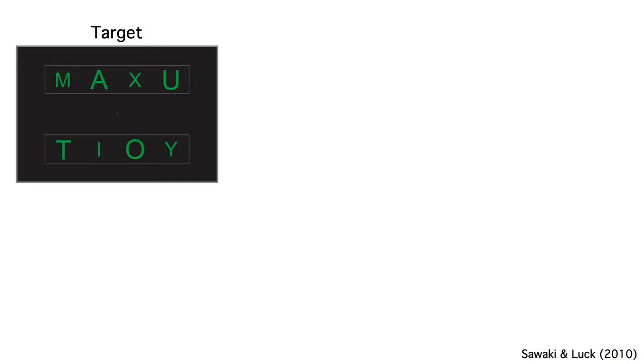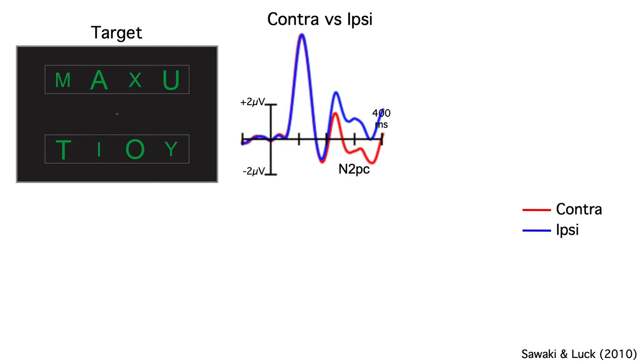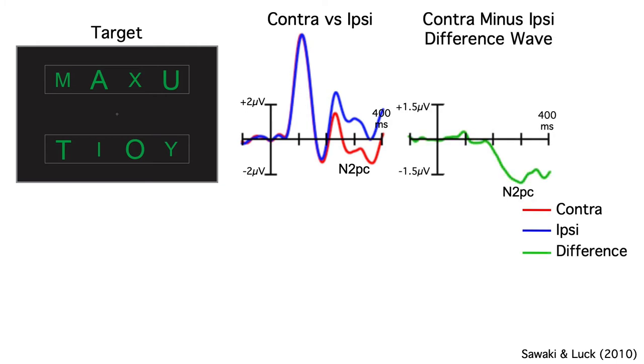Let's start by looking at the ERPs to the target, which was the large A in this example. Risa found a very clear N2PC. The voltage was more negative over the contralateral hemisphere than over the ipsilateral hemisphere. You can see it even better in the difference wave. The N2PC is way bigger than the pre-stimulus noise. As in many previous studies, we can conclude that subjects shifted their covert attention to the target, producing an N2PC.